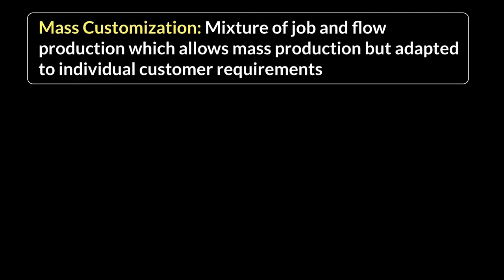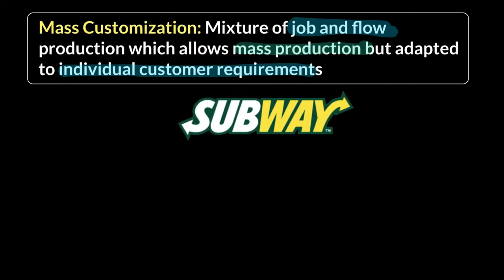Now for mass customization — a personal favorite. Mass customization is a cross between job and flow production, giving you the best of both worlds. Job production lets you meet individual customer requirements; flow production gives you high-volume speed. When you mix the two together, the result is mass customization.